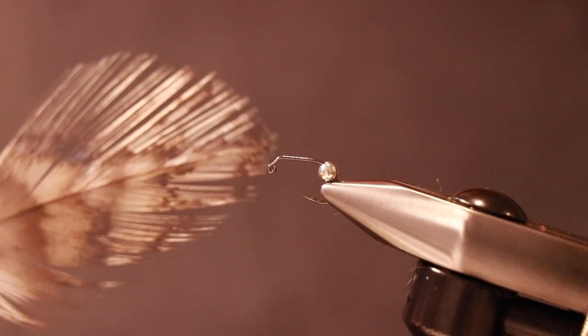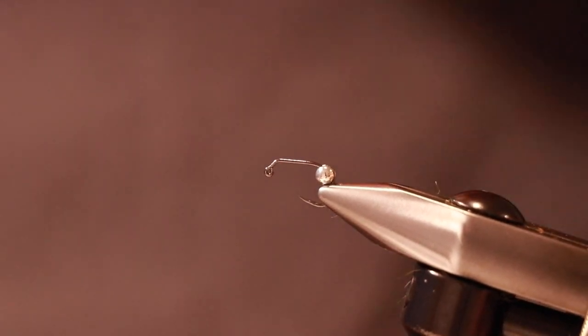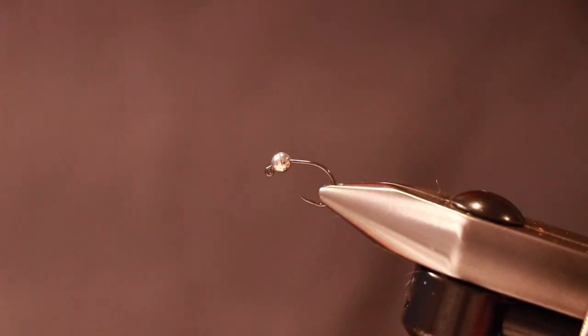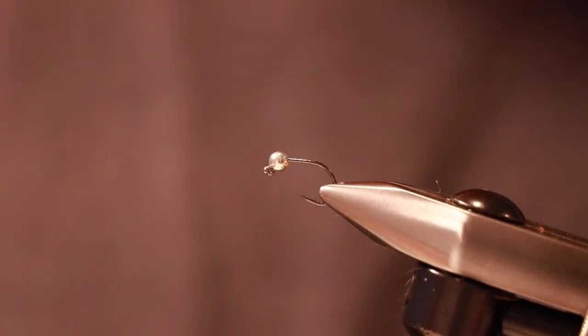I need some Coq de Leon for the tail. Other Coq hackle fibers would work just as well I'd imagine. In the vise I've got a 3mm tungsten bead, a size 16 Partridge SLJ wide gape jig hook.